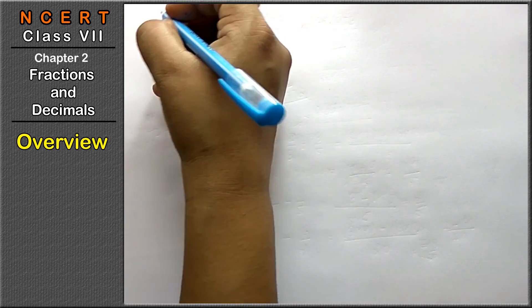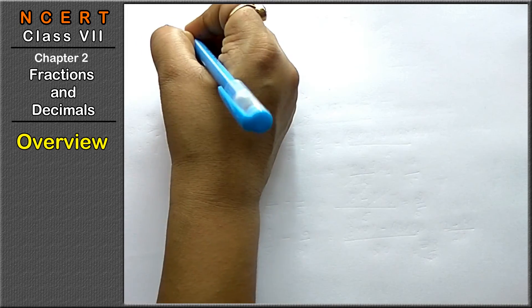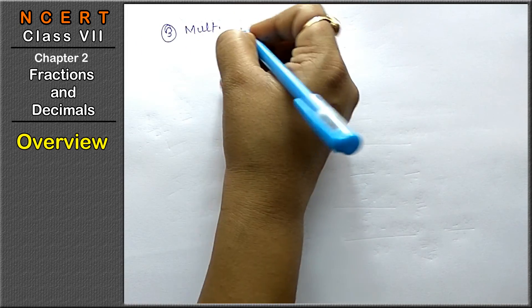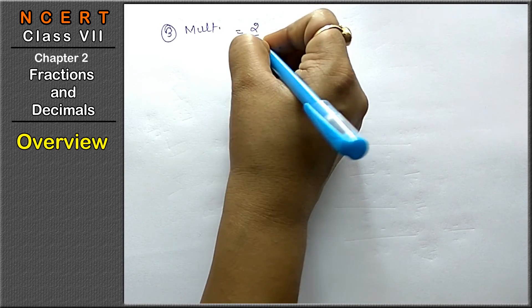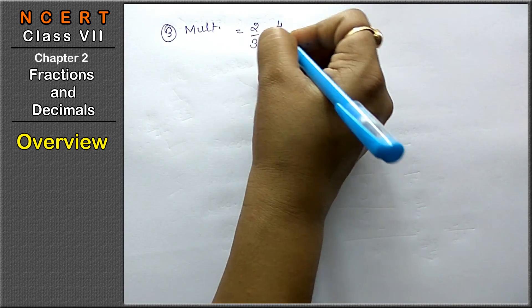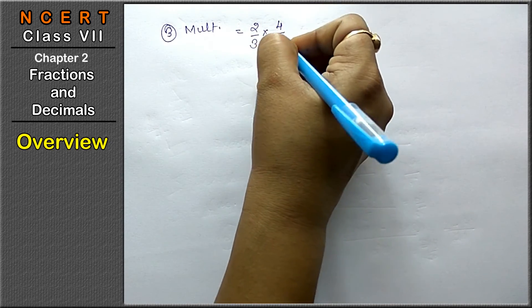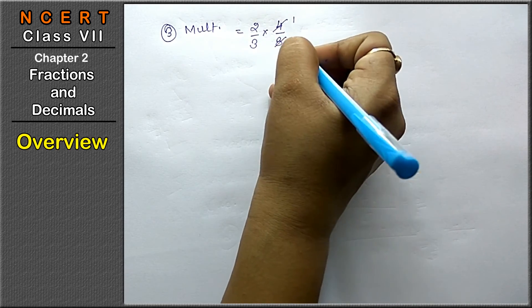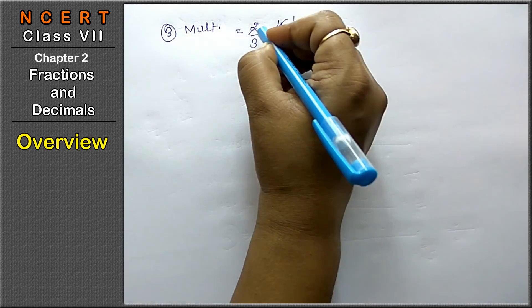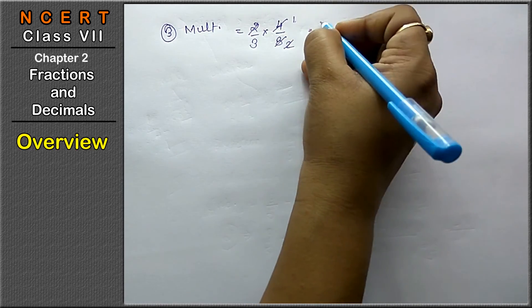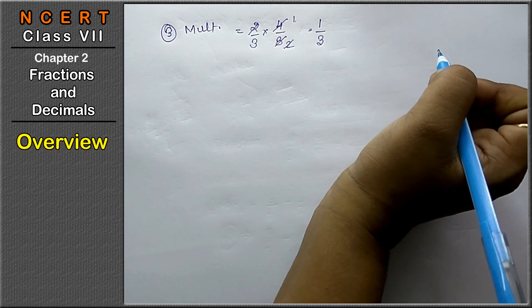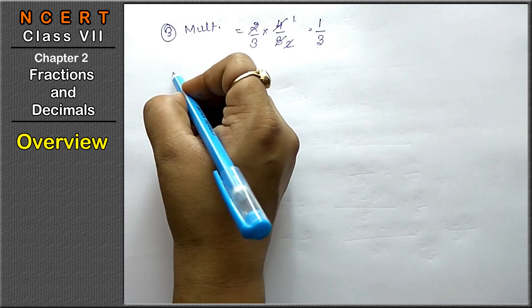Now multiplication of fractions: like 2 upon 3 multiplied by 4 upon 8. First cancel what you can — 4 and 8 cancel to give 1 and 2. Then multiply numerator by numerator and denominator by denominator to get the answer. That will be the answer for multiplication of fractions.